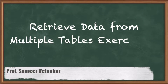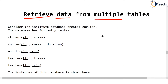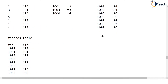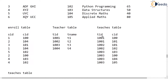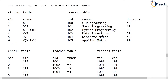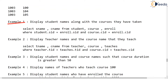Hello dear students. Let's see some more exercises on how to retrieve data from multiple tables. Just in the previous video we were working on the institute database, which has tables: student, course, enroll, teacher, and teachers. Let's solve example two, and we will solve all the examples in this video.